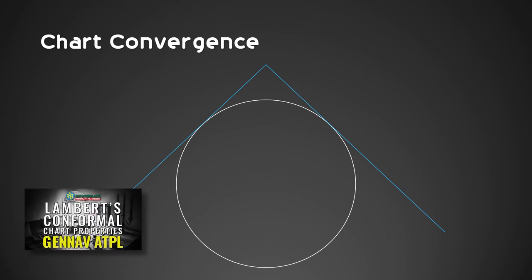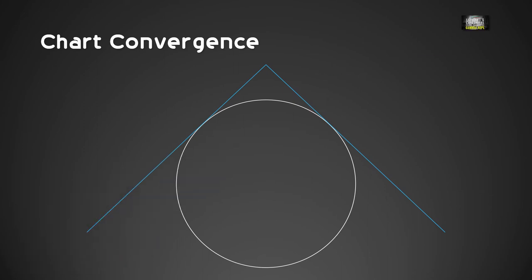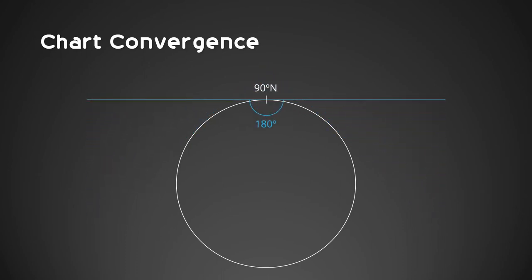In the previous video titled Lambert Conformal Chart Properties, we learned that the angle of cone is twice the value of the parallel of origin. On the screen is the front view cutout diagram of simple conic projection with latitude 45 degrees north as the parallel of origin. Since the parallel of origin is 45 degrees, the angle of cone must be 90 degrees. If we want the parallel of origin to be 90 degrees, the angle of cone needs to be 180 degrees. As you can see, the diagram is now similar to polar stereographic projection. Thus, we can conclude that polar stereographic or azimuthal projection is a variation of conical projection.